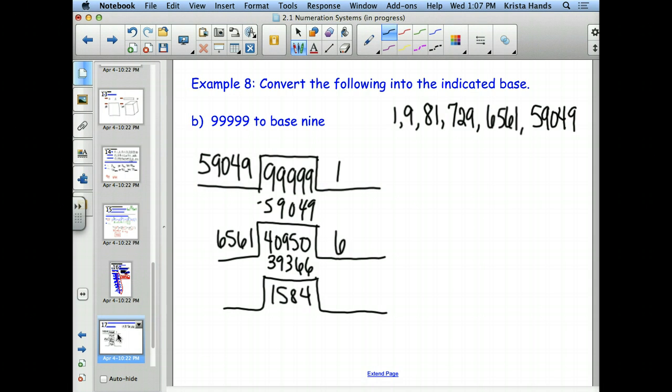What's the next value I'm going to divide by? 729. Thank you, Audrey. So I'm going to divide by 729, then how many times will 729 go into 1584? You probably should be able to see that one. Twice, yeah. All right, so what's 2 times 729?